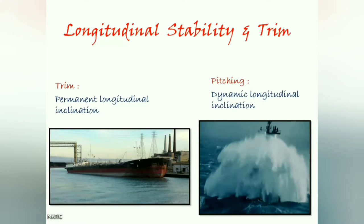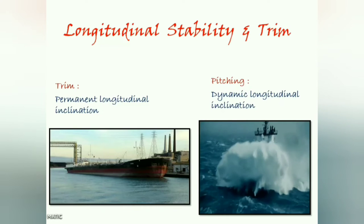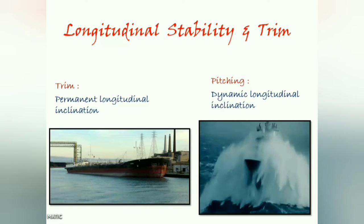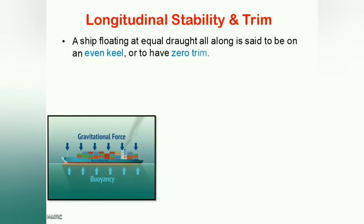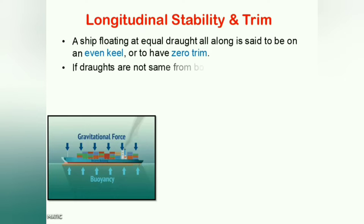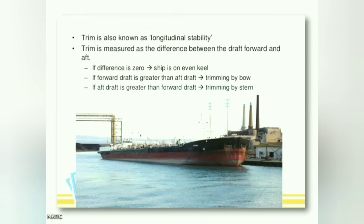Trim is defined as the permanent longitudinal inclination of the ship, and pitching is simply the dynamic one. If there is a ship floating with equal drafts all along its length, it is said to be lying on even keel, or we may say it has zero trim. On the other hand, if there is a difference in these drafts, the ship is having a trim. Longitudinal stability is primarily concerned about the ship's trim, which is the difference between draft forward and aft.